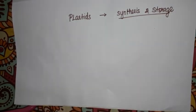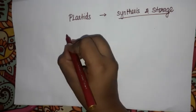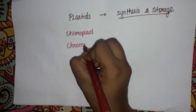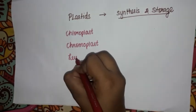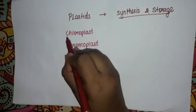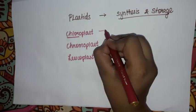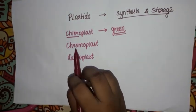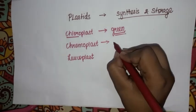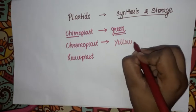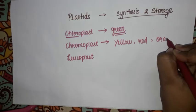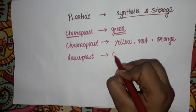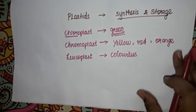So how many types of plastids are there? There are three types: chloroplast, chromoplast, and leukoplast. Chloroplast contains chlorophyll and they are green in color. Chromo means colorful, so chromoplasts have different colors like yellow, red, and orange. Leukoplasts are colorless plastids.